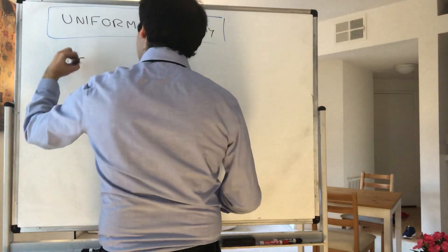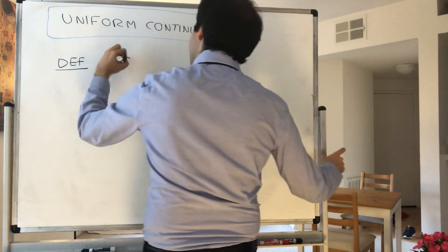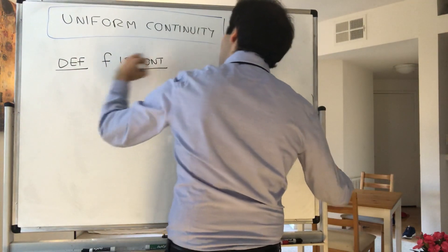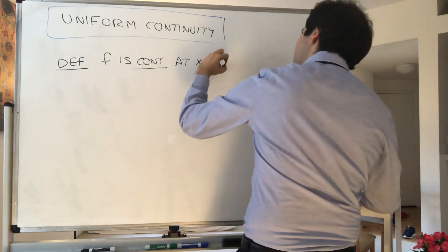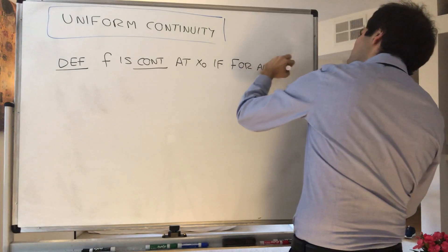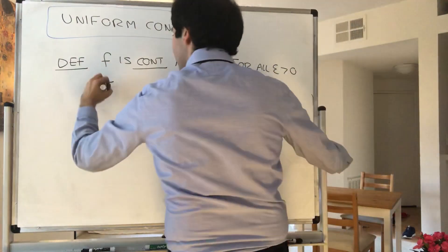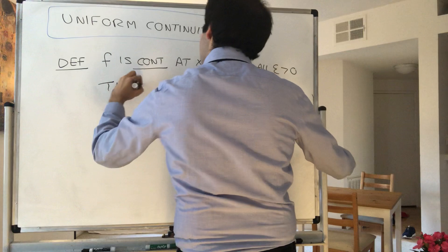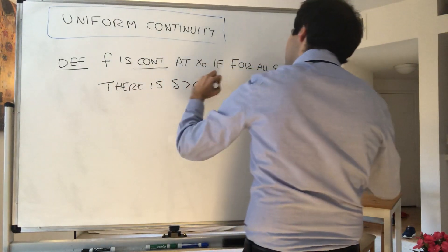So definition: f is continuous at x0 if, for all epsilon, you can find some delta, so there is delta, such that, for all x...